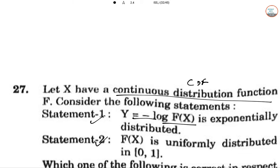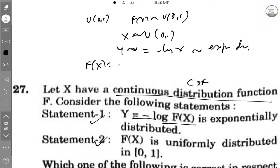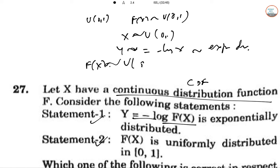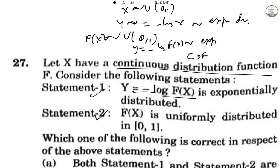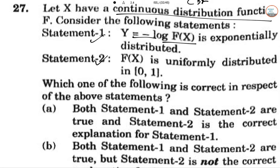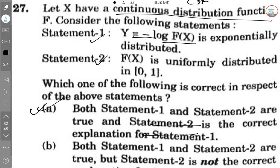A random variable U follows U(0,1), so F(X) follows U(0,1). Since X follows U(0,1), then Y = -log(F(X)) is exponentially distributed. F(X) follows U(0,1), so Y = -log(F(X)) is also exponential. Both options are correct and Statement 2 is a correct explanation for Statement 1, so option A is right.